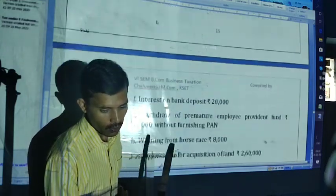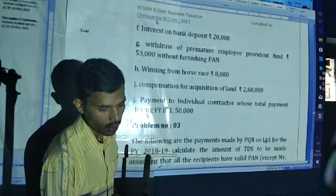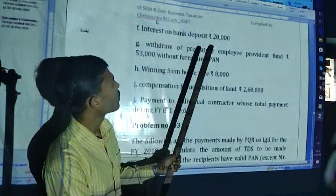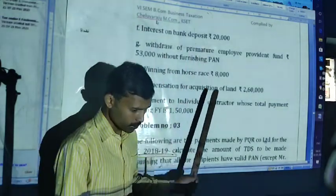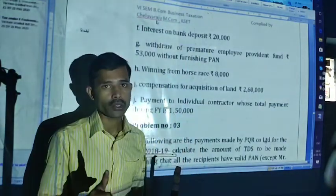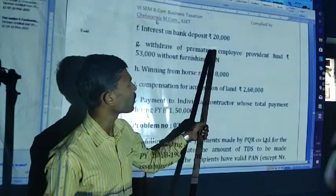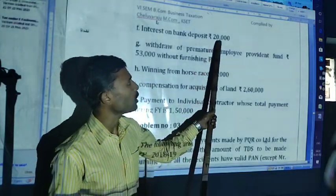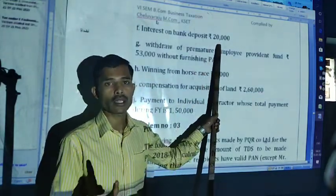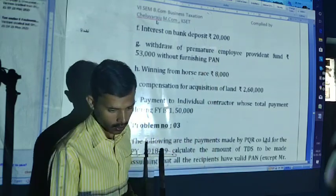Next one: interest on bank deposit. Up to 10,000 — no TDS. But here the amount is 20,000, hence it will attract TDS at 10% rate.